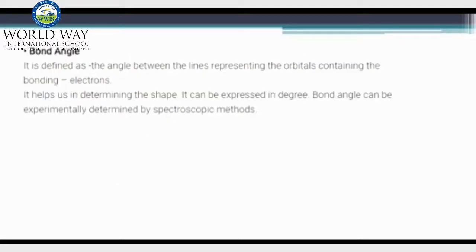Next topic is bond angle. It is defined as the angle between the lines representing the orbitals having bonding electrons. They help to determine the geometry and shape of a molecule and are expressed in the form of degrees.